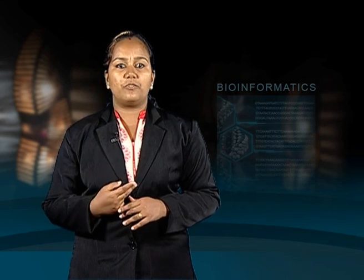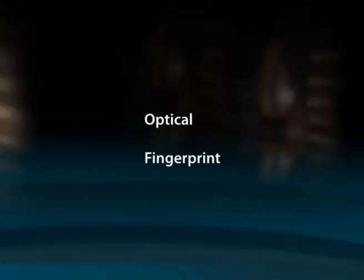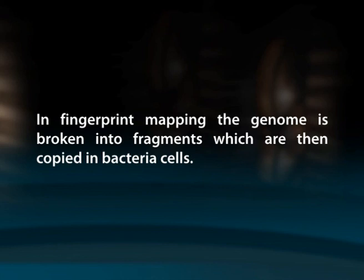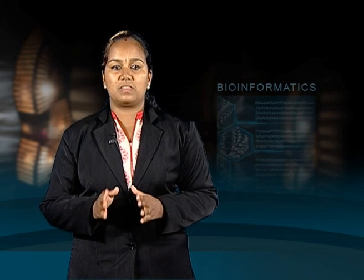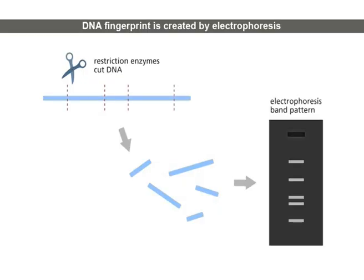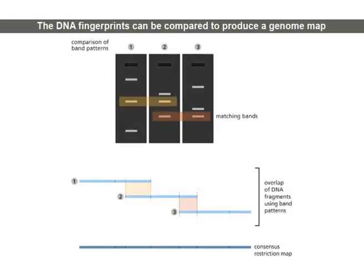There are two specific types of restriction mapping: optical and fingerprint. In fingerprint mapping, the genome is broken into fragments which are then copied in bacterial cells. The DNA copies or clones are then cut by restriction enzymes and the lengths of the resulting fragments are estimated using gel electrophoresis. Electrophoresis separates the fragments of DNA according to size, resulting in a distinct banding pattern. The fingerprint map is constructed by comparing the patterns from all the fragments of DNA to find areas of similarity. Those with similar patterns are then grouped together to form a map.